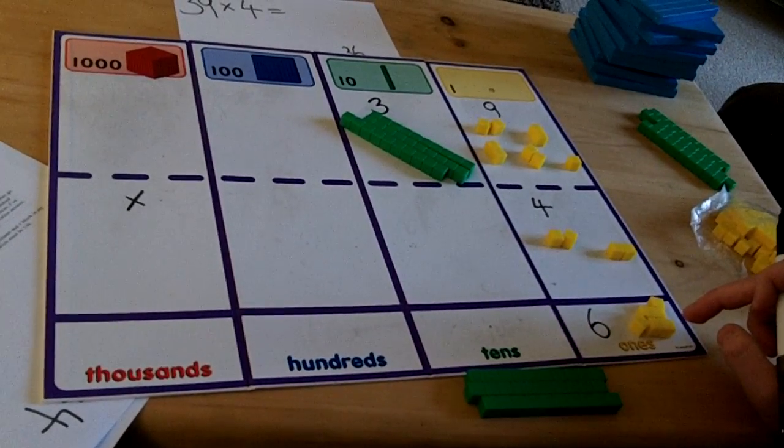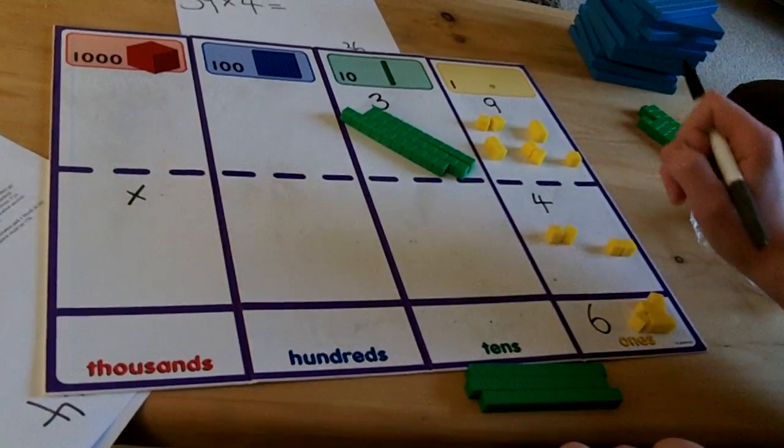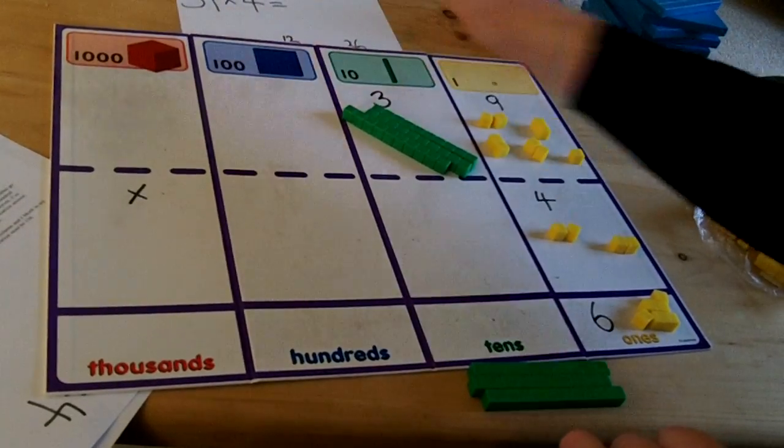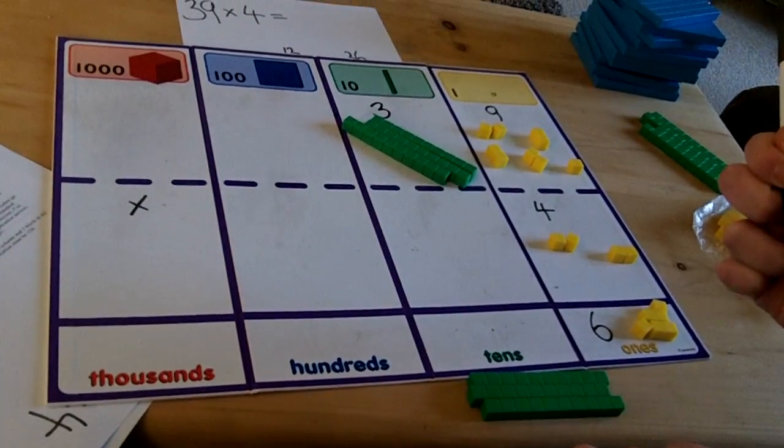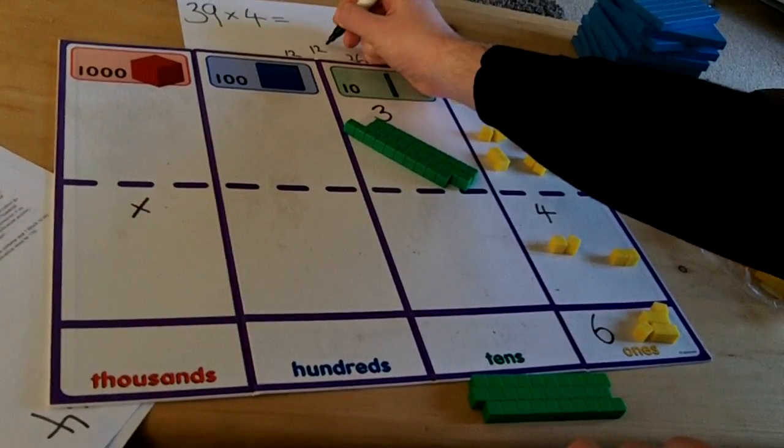Next I must solve the multiplication in the tens column. This is 30 multiplied by 4. I know that 3 multiplied by 4 equals 12 so using my place value knowledge I can work out that 30 multiplied by 4 must equal 120.